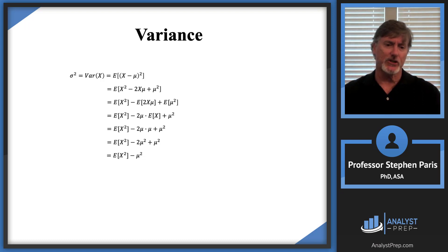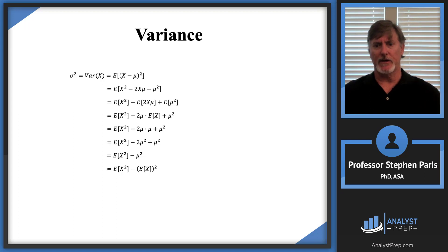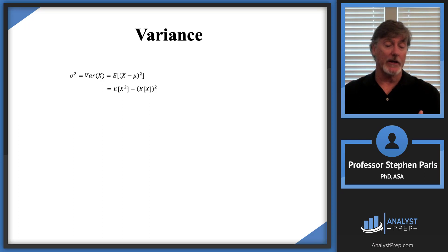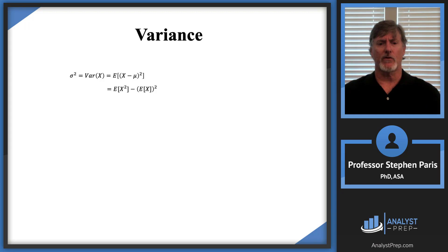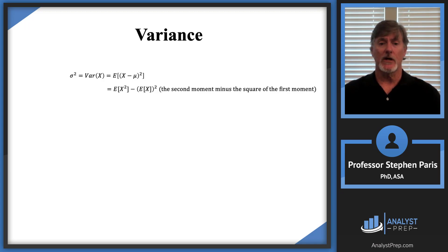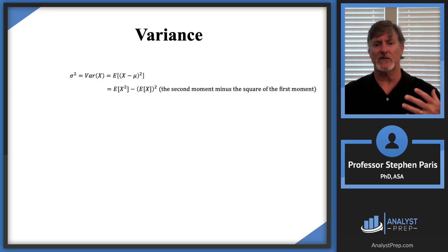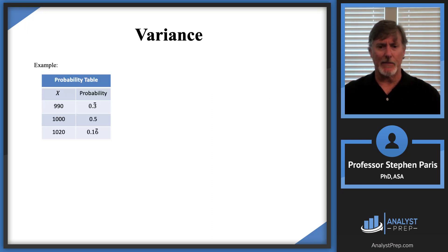Back-substituting that mu equals E[X], we get the second formula for variance: Var(X) = E[X-squared] minus (E[X])-squared. In words, the variance is the second moment minus the square of the first moment. I'll probably use this formula more often than the original definition. In many future videos I'll just say the variance is the second moment minus the square of the first moment.